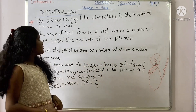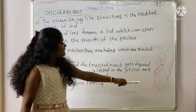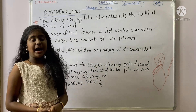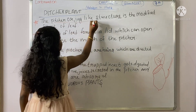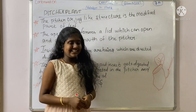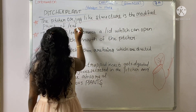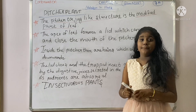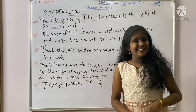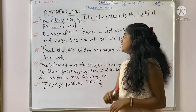The pitcher plant has a jug-like structure which is a modified part of the leaf. The apex of the leaf forms a lid which can open and close the mouth of the pitcher.